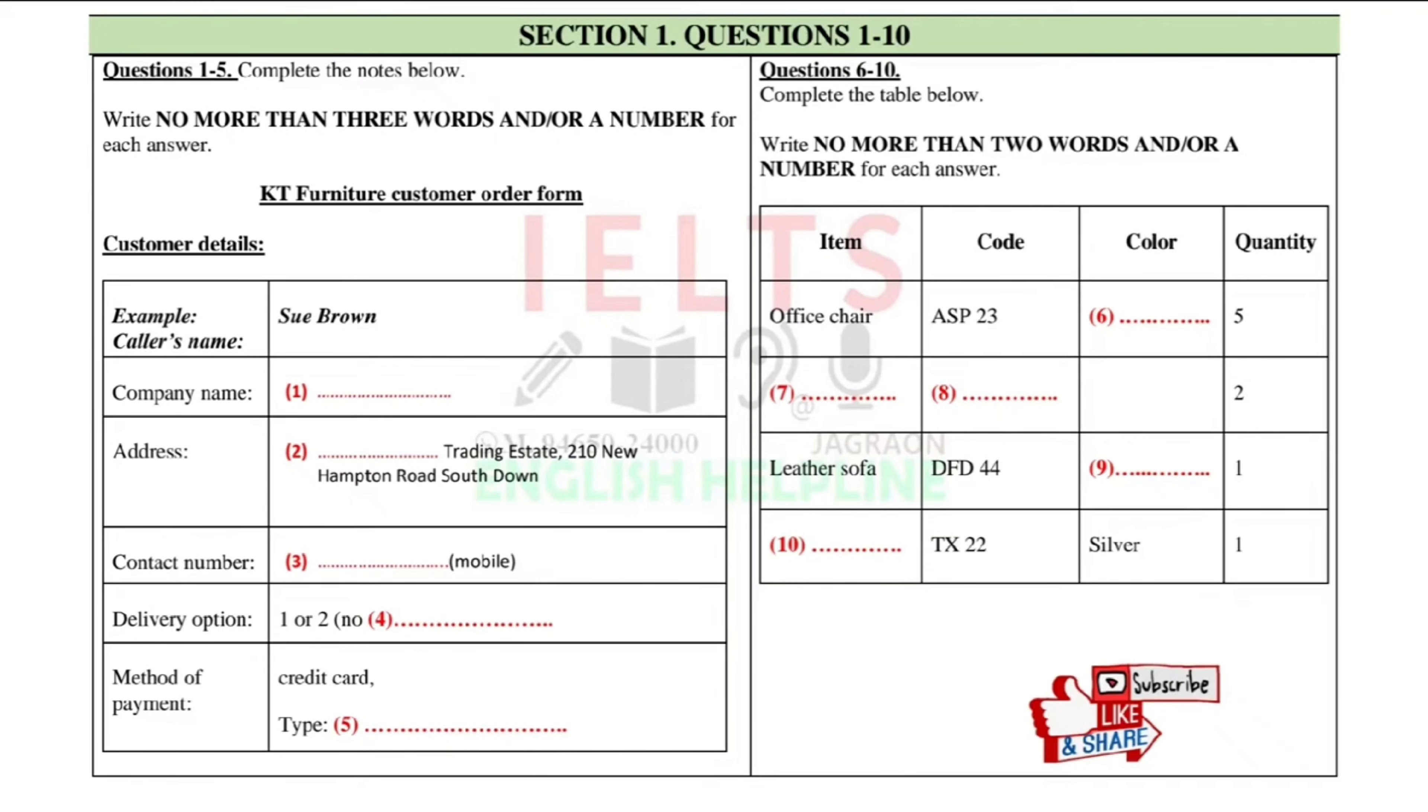And can I have a contact number for our delivery man? Sure. It's probably best if I give you my mobile number. Okay. The number's 09356 788 545. Okay. Double 788 545. Okay. That's great.